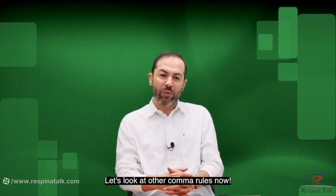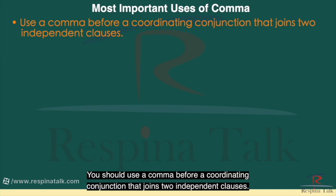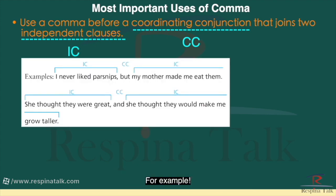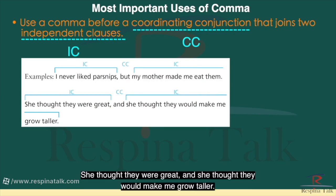Let's look at some other comma rules now. You should use a comma before a coordinating conjunction that joins two independent clauses. For example: 'I never liked parsnips, but my mother made me eat them.' 'She thought they were great, and she thought they would make me grow taller.'